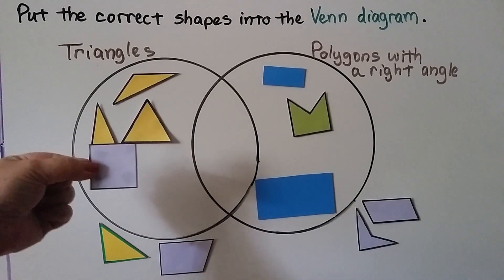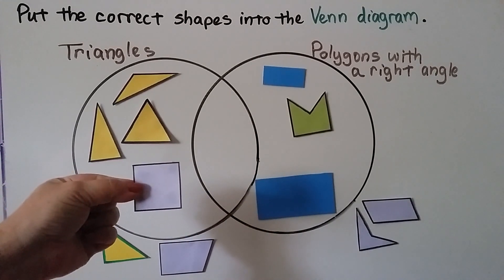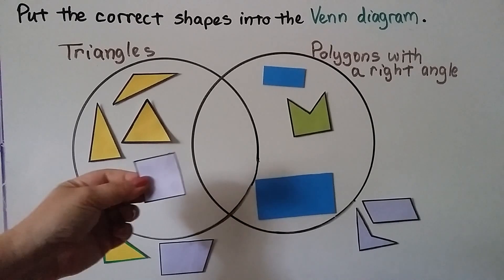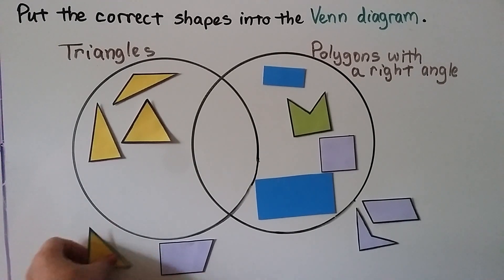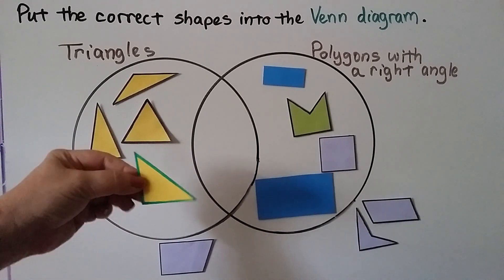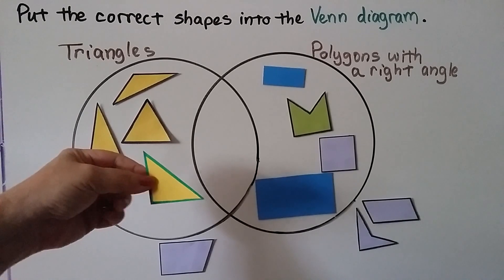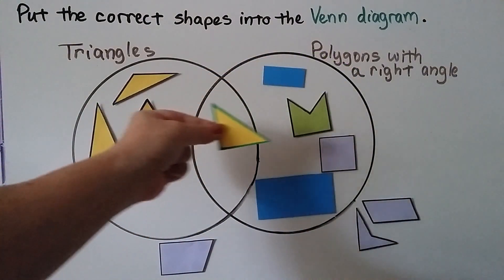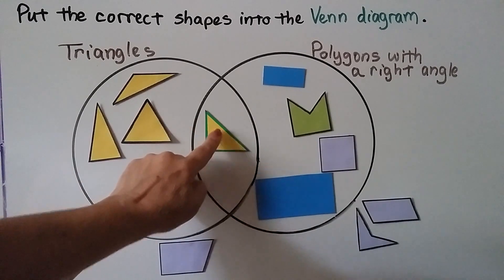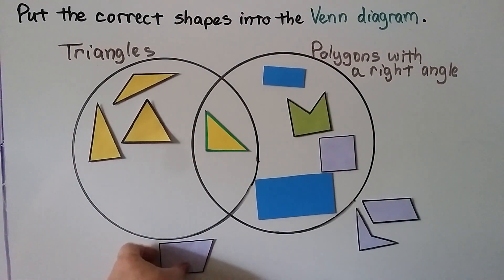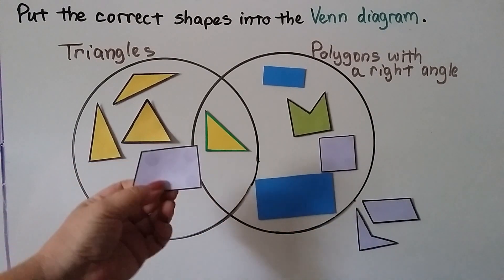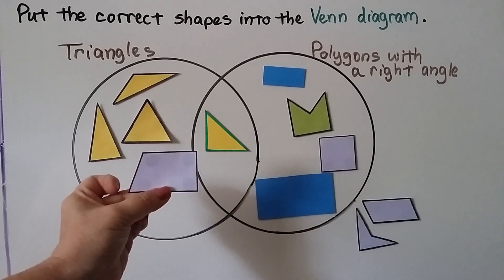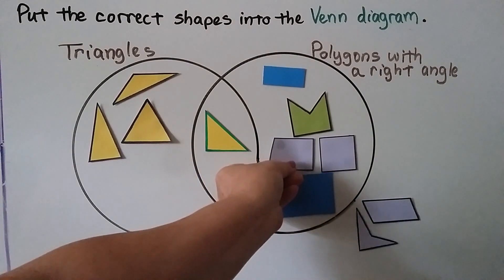What about this one? That's not a triangle — that's a square. Does it have right angles? Yes, it does. So it can go in the polygons with a right angle circle, because it has four right angles but it's not a triangle. What about this? Here we have a triangle. Does it have a right angle? Yes, it does, right here at the bottom. So it's a triangle and a polygon with a right angle — it's both, so we put it in the center overlapping section. And this last shape is not a triangle, but it does have right angles — it has two. So it's a polygon with a right angle, and we can put it there.